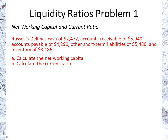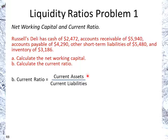Moving on to the current ratio: the current ratio is current assets divided by current liabilities. Since current assets and current liabilities are always positive numbers, this is a true ratio and will always be positive. It may be less than one if the liabilities are greater than the assets, or greater than one if the assets are greater than the liabilities.